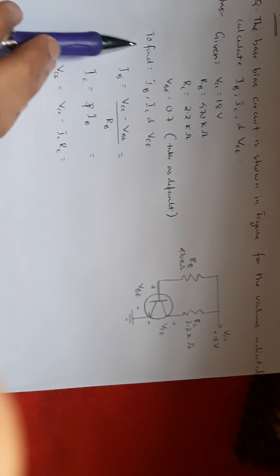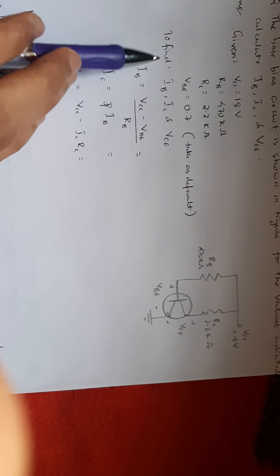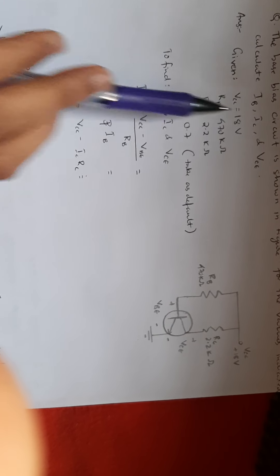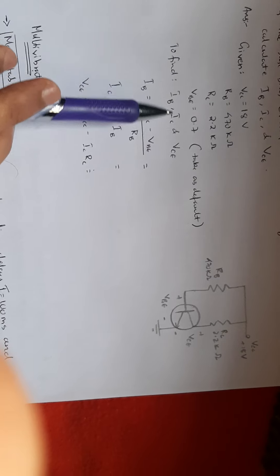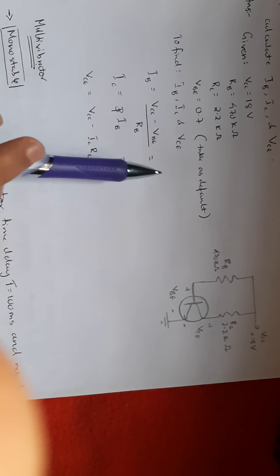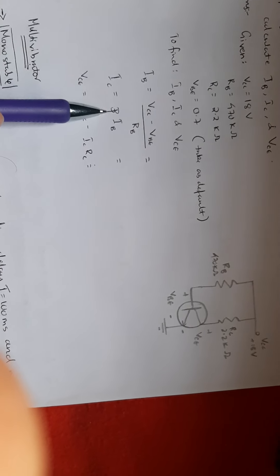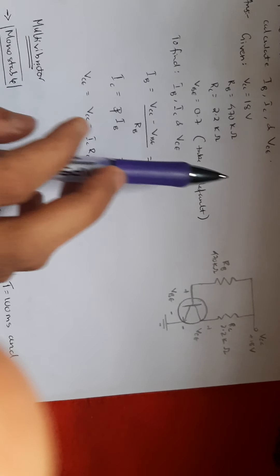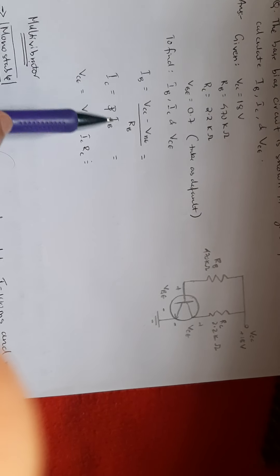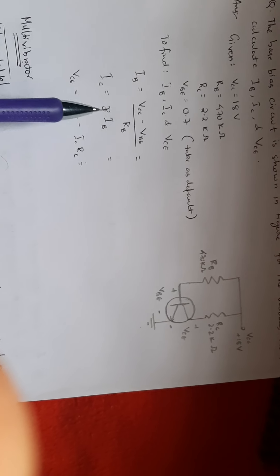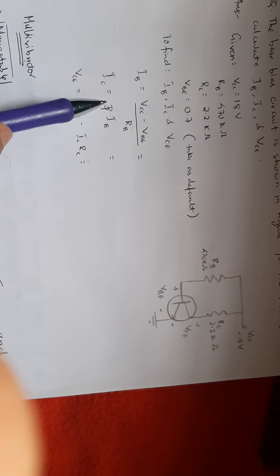For any question, just write the given values and the 'to find' part — the question becomes simpler. Then write the formula for each item and apply the values — that's it for all numericals. Beta here is almost always 100. Beta means the gain in IC due to IB. If they don't give anything you can take it as 100.